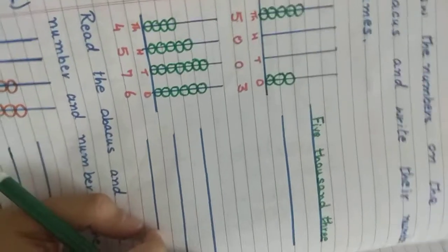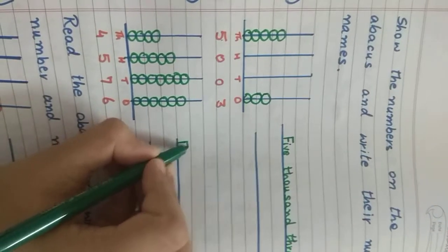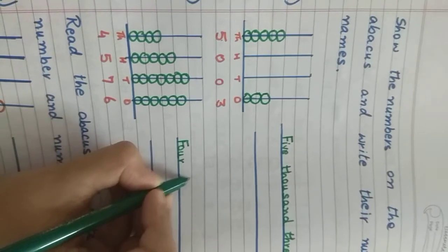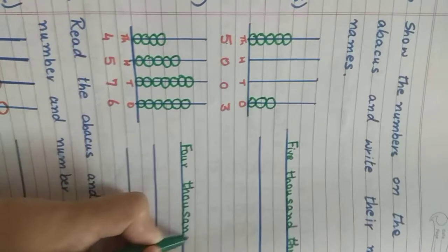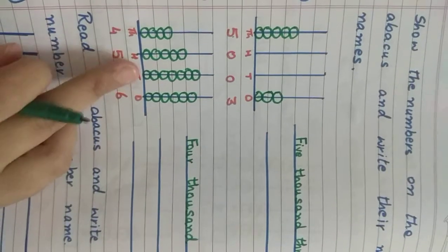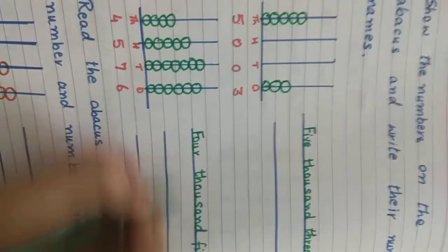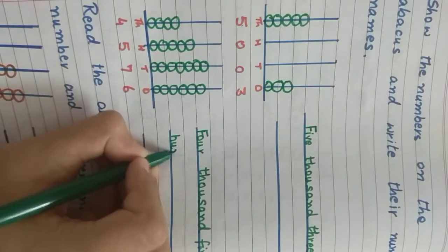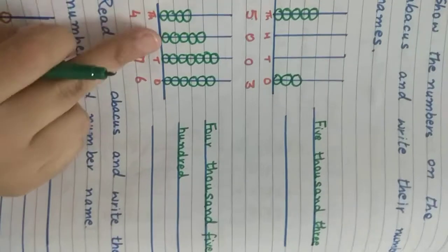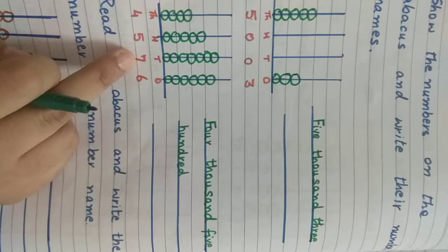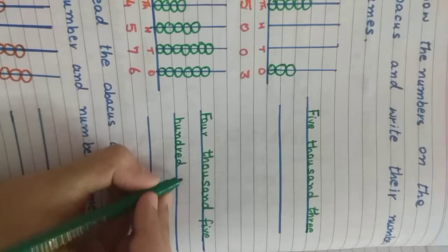Now let us write down the number name for 4,576. Four thousand — F-O-U-R, T-H-O-U-S-A-N-D — four thousand five hundred — H-U-N-D-R-E-D — seventy-six. So the number name is four thousand five hundred seventy-six.